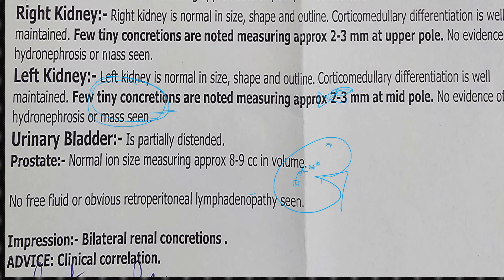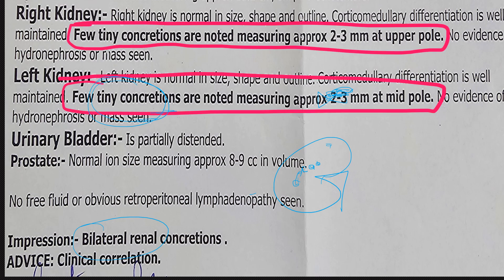In some reports these values might not be there — just 'few tiny concretions are noted' — so in the impression you might get bilateral renal concretion as an example.